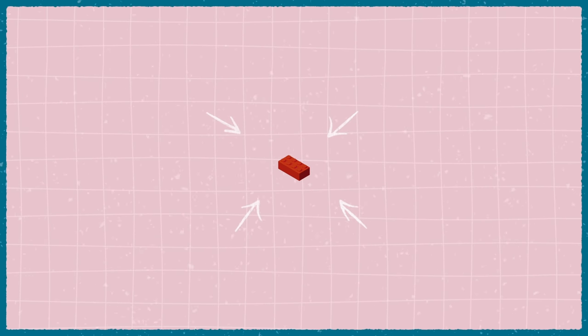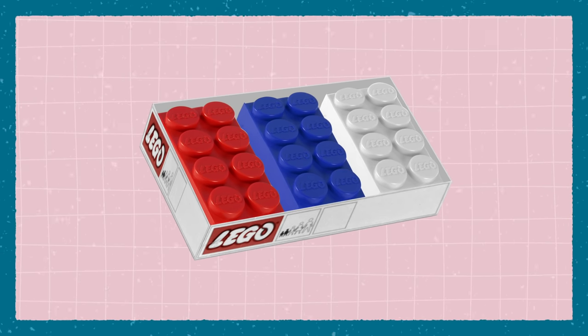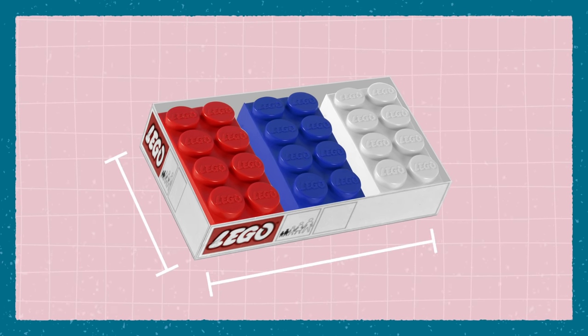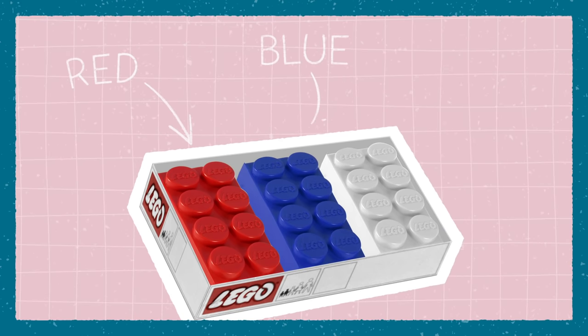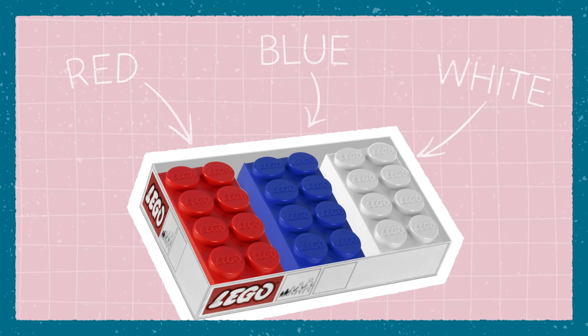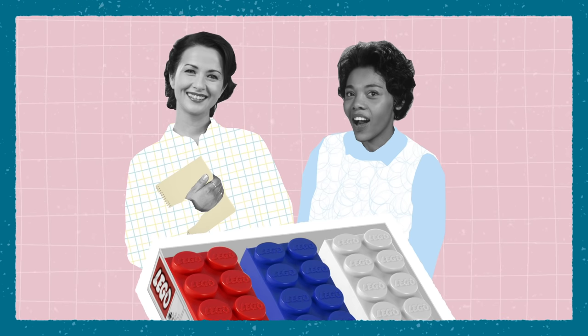As a response, the LEGO group came back with LEGO Jumbo Kindergarten bricks. Much bigger than the standard LEGO brick, they came in three different colors and proved to be an instant hit, especially with North American parents and preschool teachers.